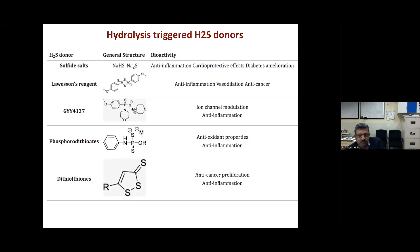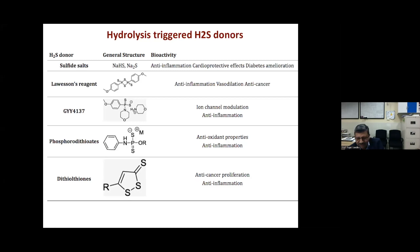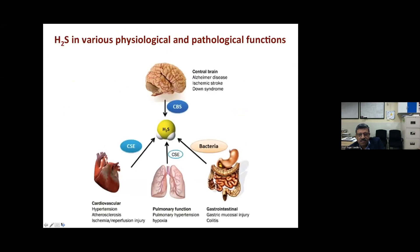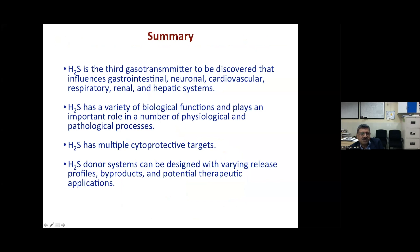Commercially available organosulfur compounds can also deliver H₂S in cells, showing antioxidant, anti-inflammatory, anti-cancer, channel modulation, and vasodilatory properties. H₂S plays key roles in the brain, cardiovascular system, pulmonary function, and gastrointestinal function — all areas where H₂S is relevant to disease. Gut bacteria also generate H₂S that enters the physiological system. H₂S is thus the third gasotransmitter, influencing gastrointestinal, neuronal, cardiovascular, respiratory, renal, and hepatic systems.